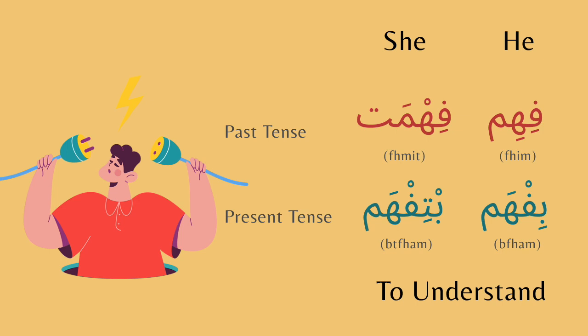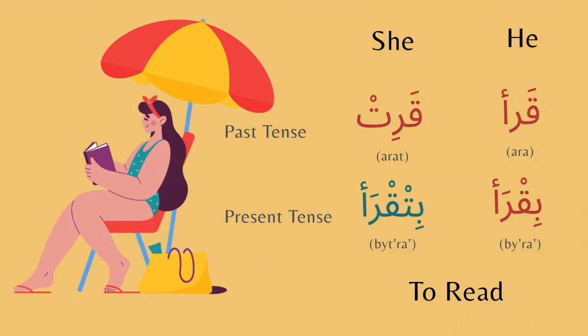Next is to understand. For the past tense, for he it would be fihim. For she it would be fihimat. The present tense for he is bifham. The present tense for she is btifham. Listen to all of them again.